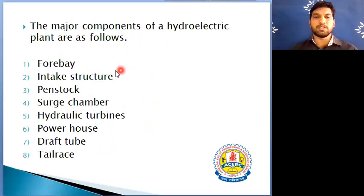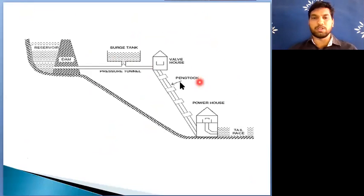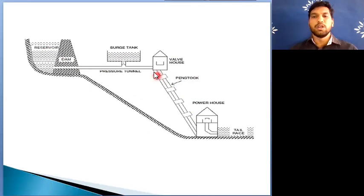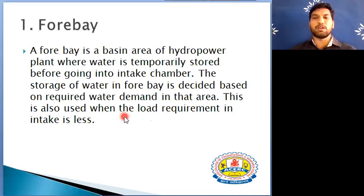Now we will discuss each component one by one. This is the layout of a hydroelectric power plant where all the components are shown: reservoir, surge tank, penstock, powerhouse, and tailrace.